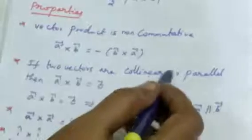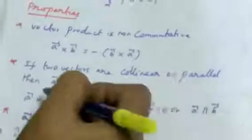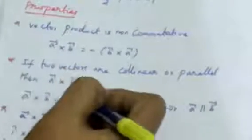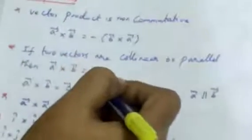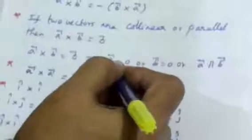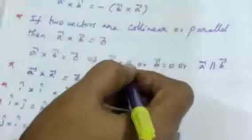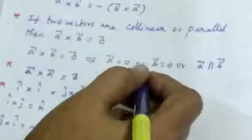If two vectors are collinear or parallel, then A cross B equals zero vector. So A cross B equals zero vector means either A equals zero, or B equals zero, or A is parallel to B.